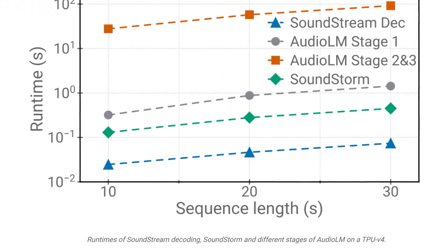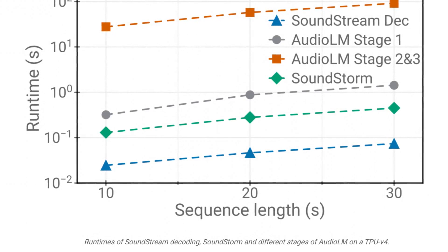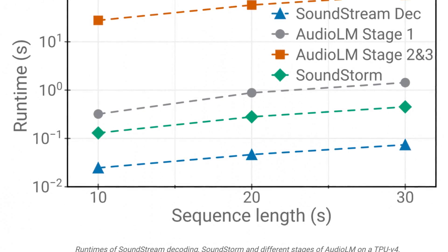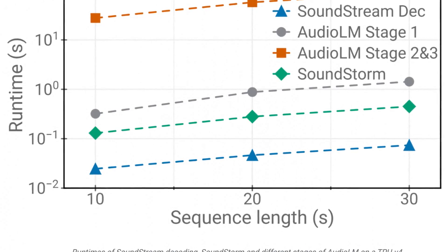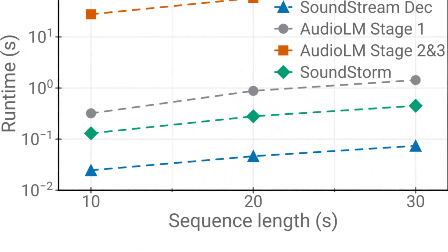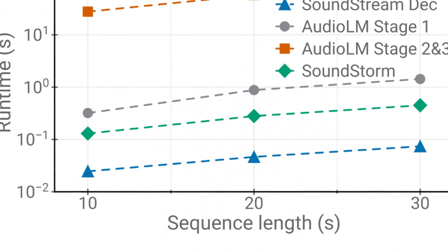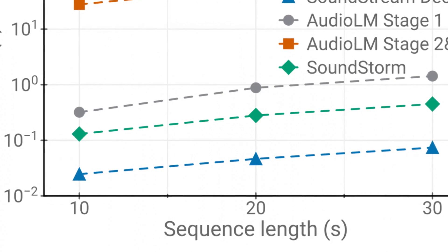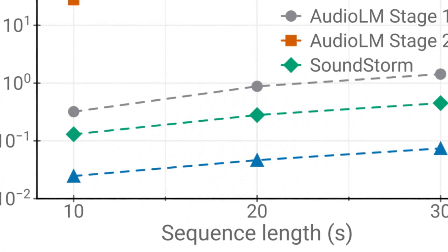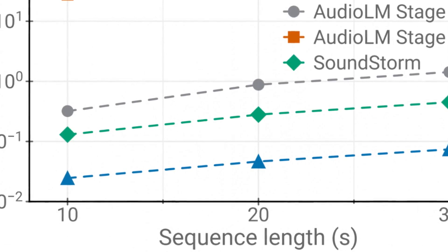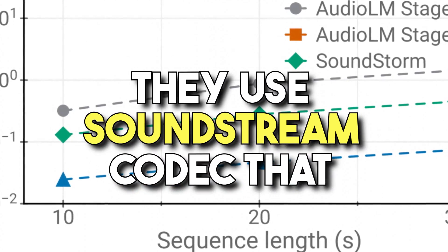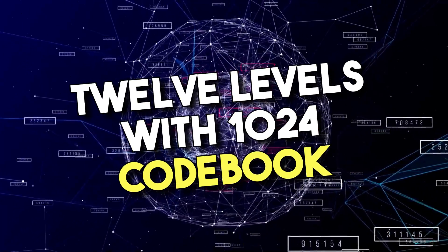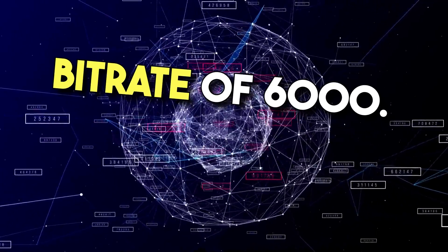Soundstorm matches the quality of AudioLM's acoustic generator. Soundstorm produces audio 100x faster than AudioLM's hierarchical autoregressive acoustic generator with matching quality. Speech intelligibility is measured by the word error rate and character error rate of the generated audio after transcribing it. Soundstorm improves over AudioLM's acoustic generation easily. They use the Soundstream codec that produces 50 frames per second and uses an RVQ with Q equals 12 levels, with a codebook size of 1024 per level and a bitrate of 6000.